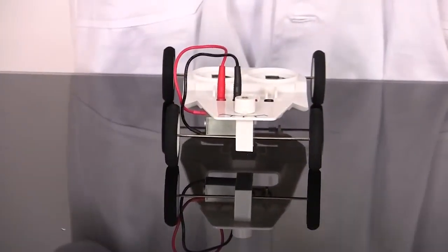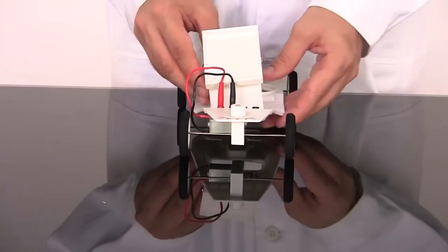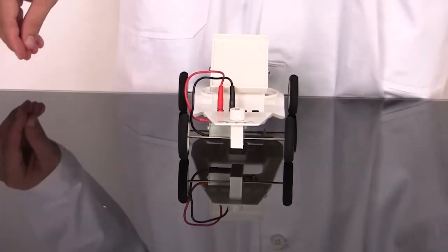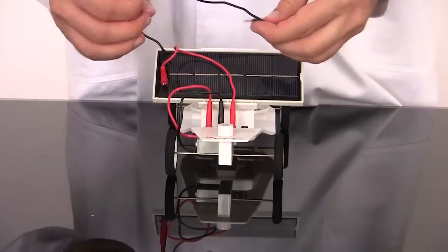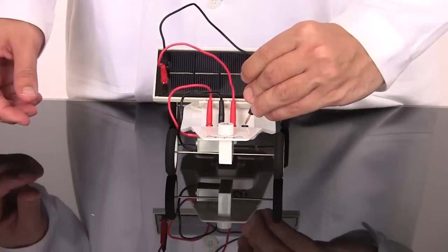Lastly, you can also use the solar panel to power your car. Place the solar panel on the included mount and connect it to the motor to start the car.